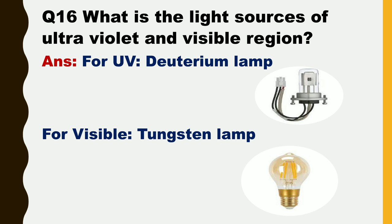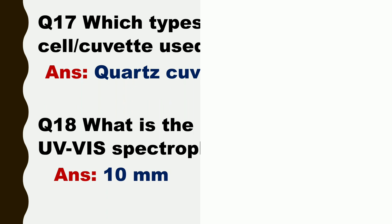Next question is: what are the light sources of the ultraviolet and visible regions? The answer is, for UV, the light source is the deuterium lamp. And for visible, the light source is the tungsten lamp.